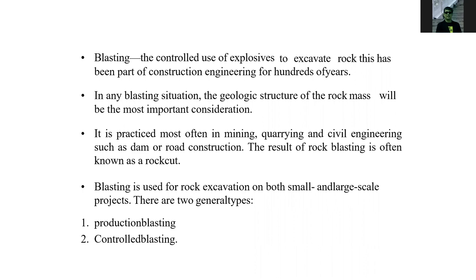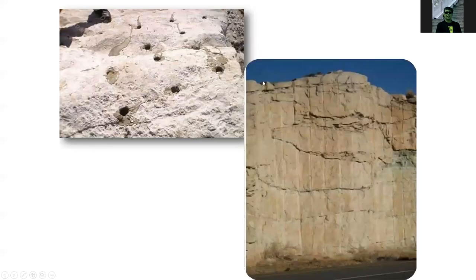The result of rock blasting is often known as the rock cut. Blasting is used for rock excavation on both small and large projects. There are two general types: production blasting and controlled blasting. In blasting sites, holes are drilled into the rock, explosives are inserted into these holes, and then the rock is blasted, resulting in the removal of the solid rock from that particular area.